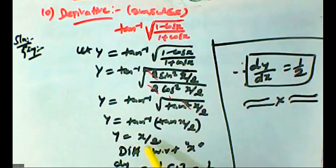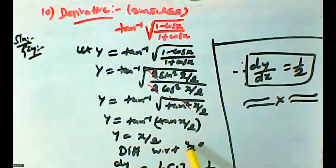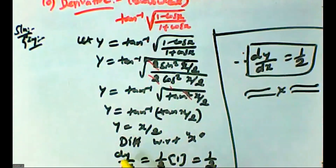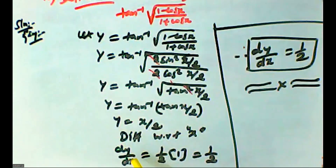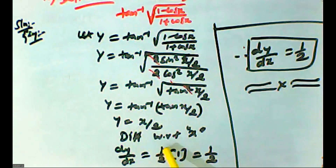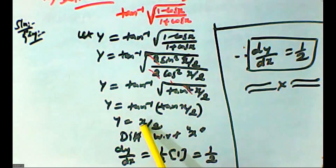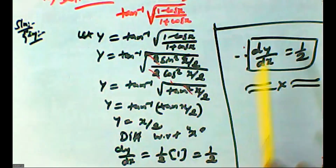Now differentiate with respect to x. Since y equals x by 2, and 1/2 is a constant, dy by dx is equal to 1 by 2. The answer is 1 by 2.